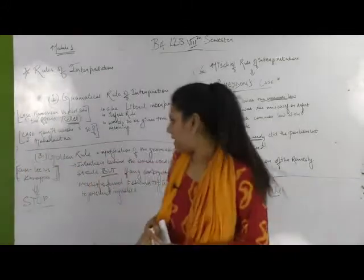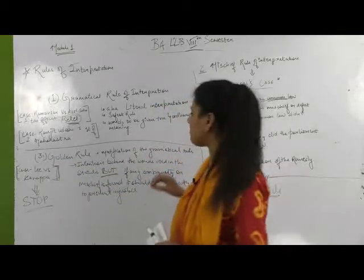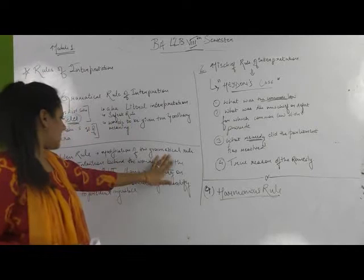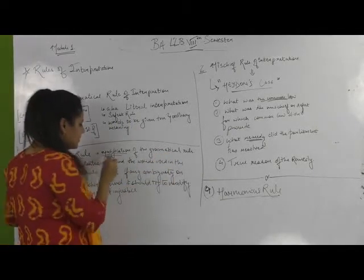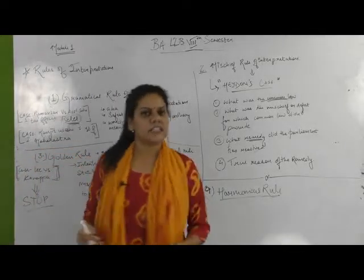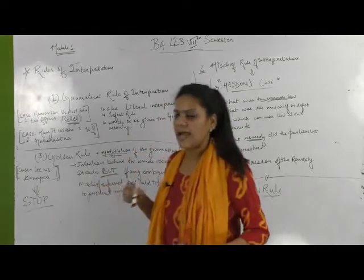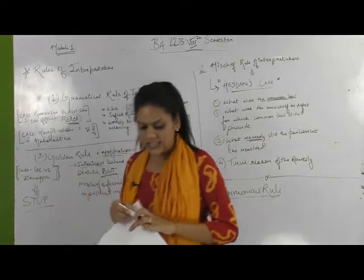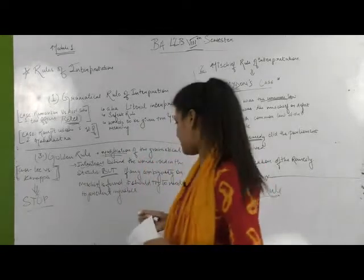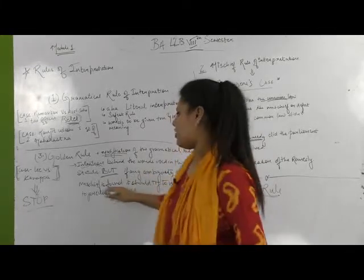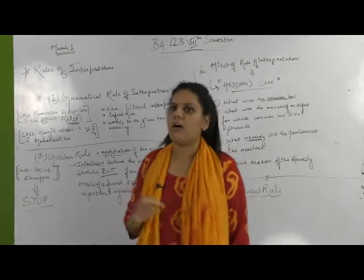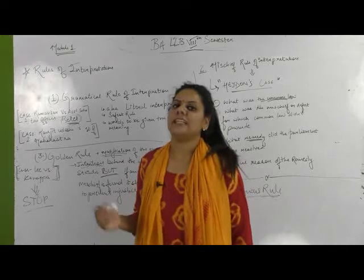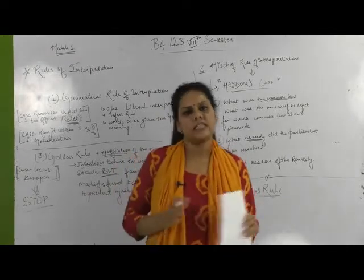The third rule is the golden rule. The golden rule is nothing but a modification of the grammatical rule discussed earlier. Modification itself tells you that you are not supposed to fiddle with any law or existing words inside the law or any phrase you are supposed to interpret. What the court must do is try to find the intention or intent behind the words used in a particular phrase or law provision. But if any ambiguity, mischief, or absurdity is found by the court, it has the full right to modify it so as to prevent injustice.